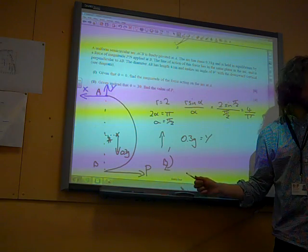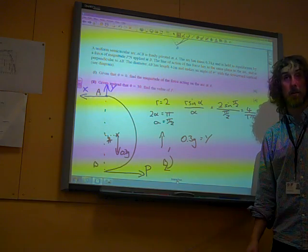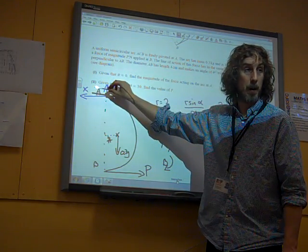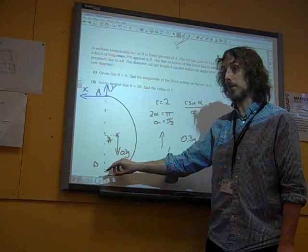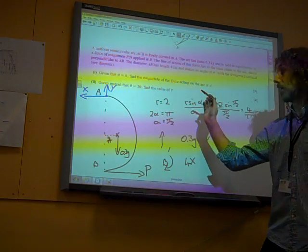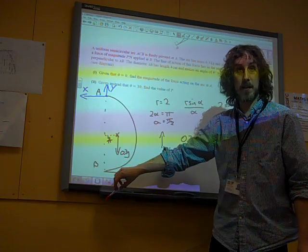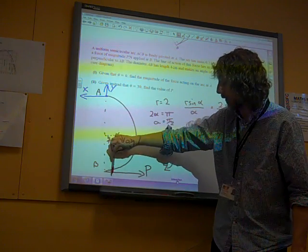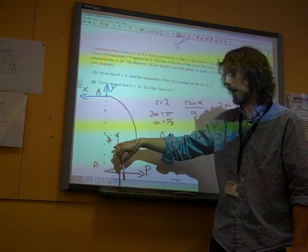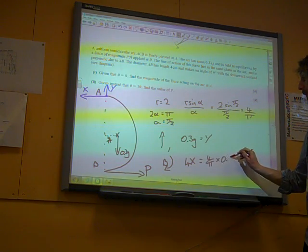If we now take moments about B, we don't need to worry about P either. And remember how the moments work. It is the magnitude of the force times the perpendicular distance of its line of action. So that force there, its line of action, perpendicular distance, is 4 away from B. So we want to put in 4 times X. That would take us in that direction. This force is trying to turn it around the other way, isn't it? And so that horizontal distance, the perpendicular distance of its line of action, is 4 over π times 0.3g. So that is 4 over π times 0.3g.